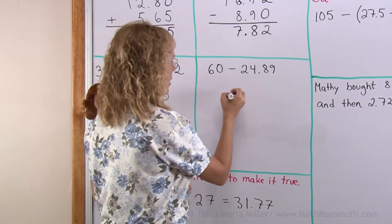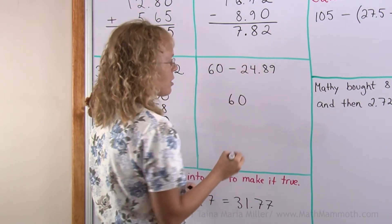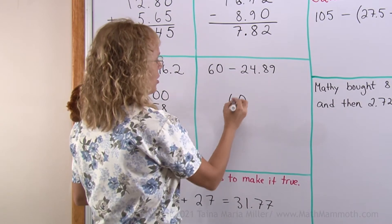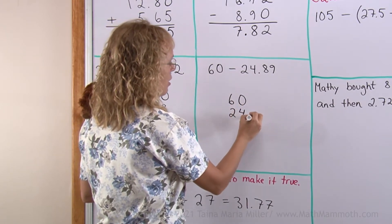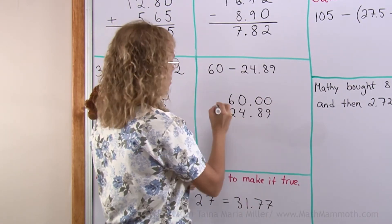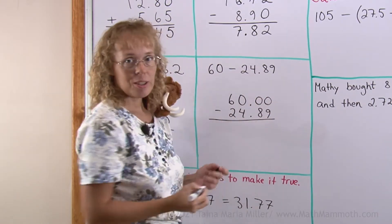Subtraction. The same happens. I'll write sixty here. But where does the twenty-four point eight nine go? Twenty-four has to go under the sixty and then the point eight nine. And so for sixty we will add now the decimal point and zeros. And now it's all set up.